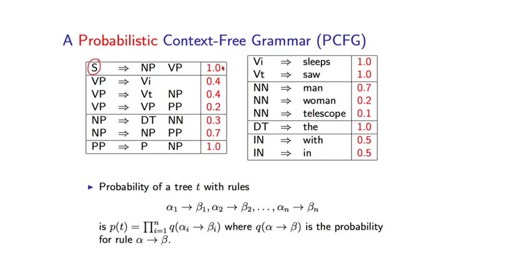So S goes to NP VP, for example, has probability 1. VP goes to VI has probability 0.4, and so on. These probabilities have one critical property. If I take any non-terminal in the grammar, let's take VP for example, there are a number of possible ways of expanding that non-terminal. So VP can be expanded in three different ways here. It can be written as VI, or VT NP, or VP PP.